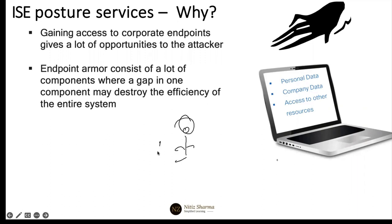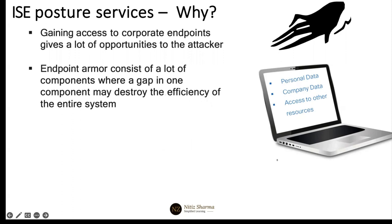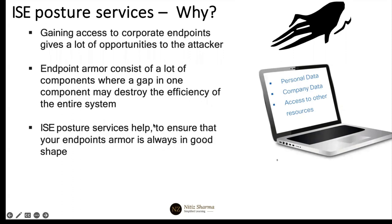Think: if I'm riding a bike without a helmet but have arm guards, leather jacket, and shoes — if one piece is missing, it can destroy the efficiency of the entire system. So ISE posture services help ensure that your endpoint armor is always in good shape. The main agenda of posturing is to make sure that armor is well-intact, going good, and being maintained well. ISE posture is not going to provide protection from any kind of attack, but it makes that armor well and in good shape. It is a proactive measure.